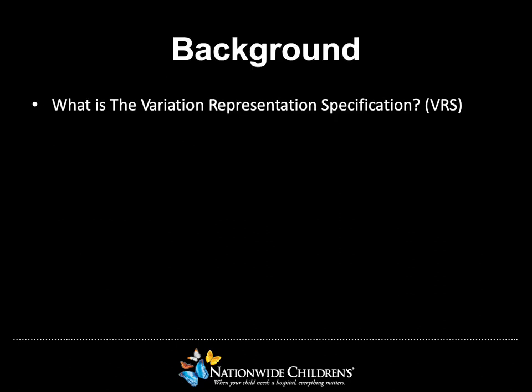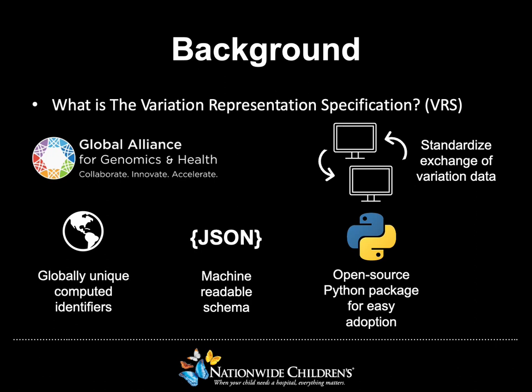To get started, let's cover what the Variant Representation Specification, commonly referred to as VRS, is. VRS is a specification developed by the members of the Global Alliance for Genomics and Health for the standardization of the exchange of variation data. It suggests an algorithm for computing globally unique identifiers to promote consistent variation representation and sharing. Its current implemented schema supports JSON, which is a common machine and human-readable schema.